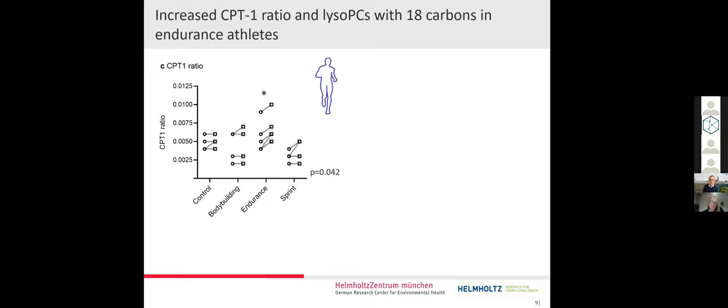You can see in the graph that the CPT-1 ratio is higher pre- and post-exercise in endurance athletes. What's also interesting is that whereas in all endurance athletes, CPT-1 increases after exercise, this is only the effect for the minority of subjects in the other groups. What could be the reason for this?